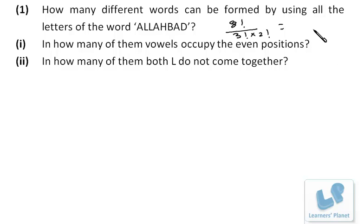In how many of them both L do not come together? First, I'll take both L's together. Remaining are A, A, A, H, B, and D. I take this as a single letter. Now it's 1, 2, 3, 4, 5, 6, 7. So 7 factorial arrangements will be there.